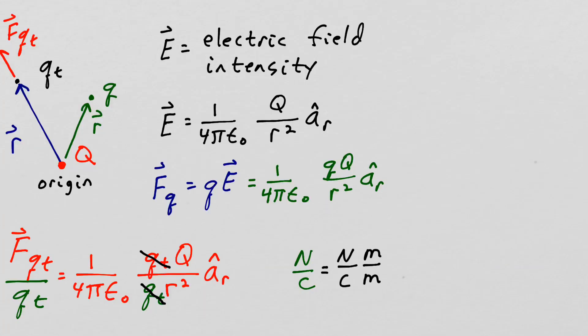A newton times a meter is a force through a distance, so that's work. So newtons times meters is a joule, so we have a joule over coulombs per meter.